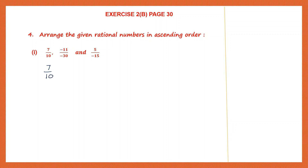The second one, minus 11 by minus 30. Since both the numerator and the denominator have a minus sign, we can cancel both the signs, so that becomes 11 by 30. Then the third one, 5 by minus 15 — the denominator has a minus sign. We can take it off and give it to the numerator, so that becomes minus 5 by 15. The value does not change.